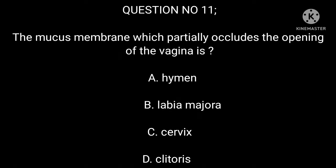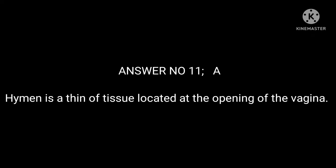Question number 11. The mucous membrane which partially occludes the opening of the vagina is: A. Hymen. B. Labia majora. C. Cervix. D. Clitoris. Answer number 11: A. The hymen is a thin piece of tissue located at the opening of the vagina.